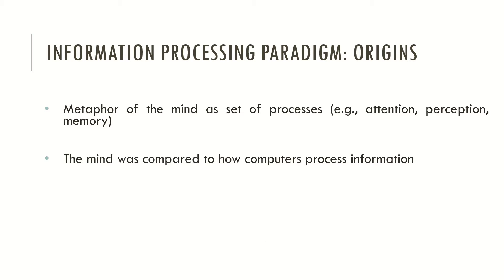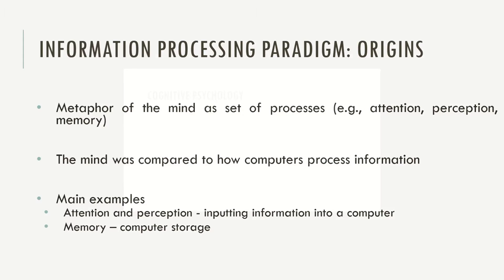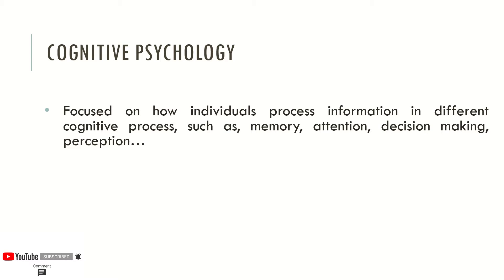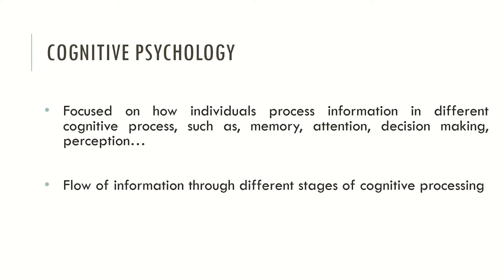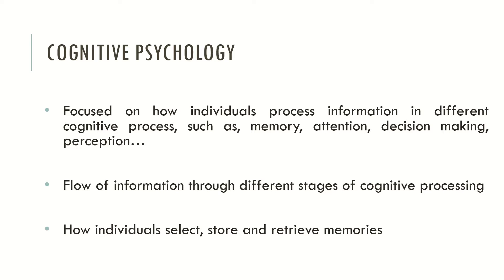Some main examples: attention and perception may be related to inputting information into a computer. Cognitive psychology was very much influenced by this theory and started to focus on how individuals process information in different cognitive processes such as memory, attention, decision making, or perception. Cognitive psychology focused on the flow of information through different stages of cognitive processing and on how individuals select, store, and retrieve memories — showing how cognitive psychology was influenced by the information processing paradigm.